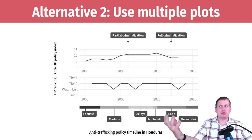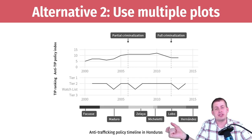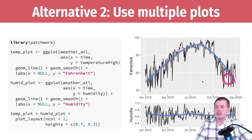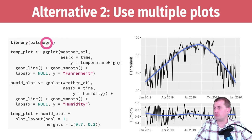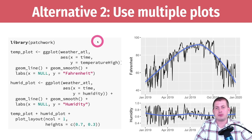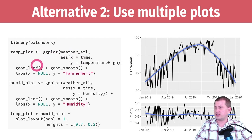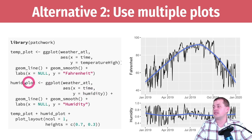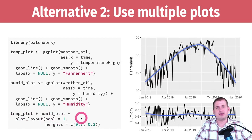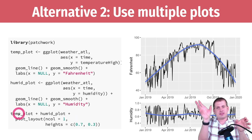Doing this in R is actually really easy. There's a package called `patchwork` that lets you just add ggplot objects together. If you Google 'R patchwork' you'll find the documentation — it's super well-written with lots of examples. Here's how it works: I made a temperature plot using `geom_line` and `geom_smooth` with temperature high over time, stored as `temp_plot`. Then I made a second plot with humidity over time, stored as `humid_plot`. With patchwork, you just use the plus sign: `temp_plot + humid_plot`.